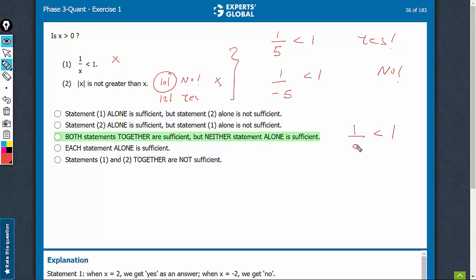1 upon 0 is positive infinity, which is of course a huge number. It is not less than 1, it is greater than 1. And therefore, on combining, we can eliminate this case of 0.